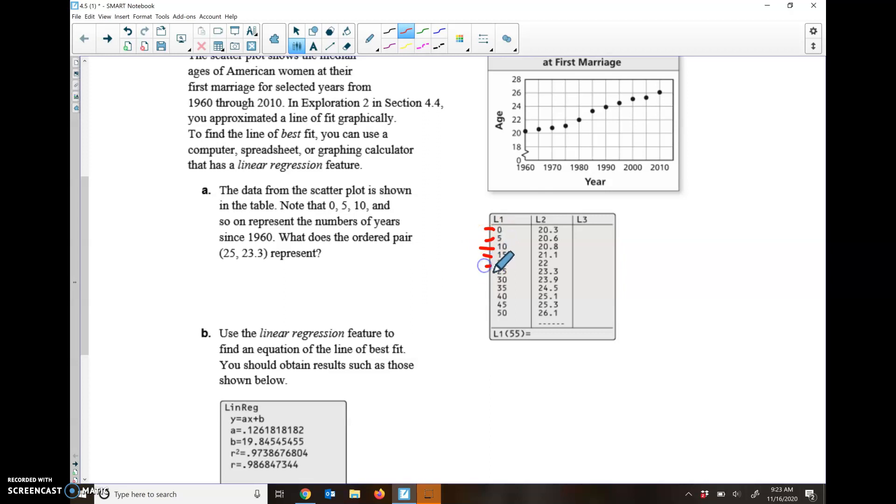They're asking about all the way down here at 25. So if this is 1960, that's 1965, that's 1970, that's 1975, that's 1980, that would be 1985. So it represents the year 1985, and the Y column represents the median age. In 1985, the median age for marriage was 23.3 years old.